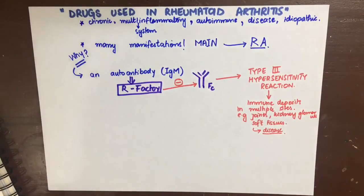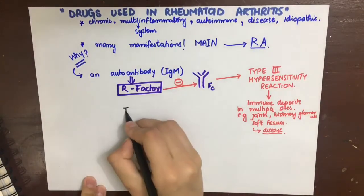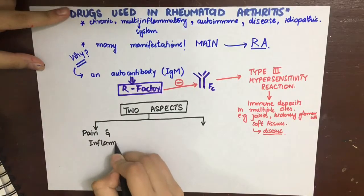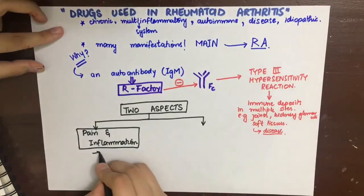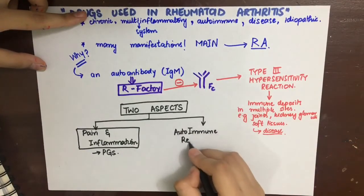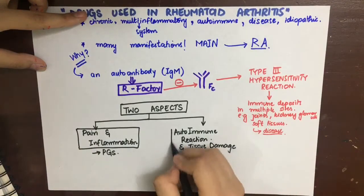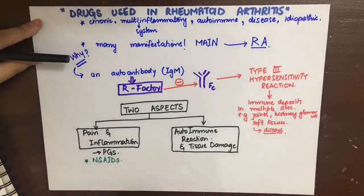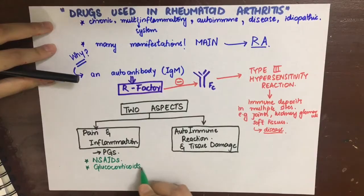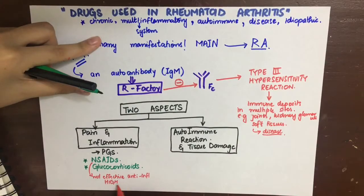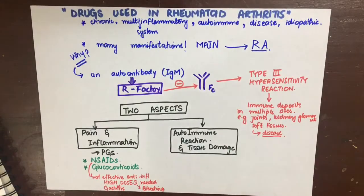To treat rheumatoid arthritis we focus on two aspects. One is the pain and inflammation that the disease causes — what the patient complains about most — which is due to prostaglandins and leukotrienes. The other is the autoimmune reaction and the further damage occurring to organs. To combat the pain we use NSAIDs, which also have anti-inflammatory actions, but high doses are required and at high doses NSAIDs have a vast variety of side effects including gastritis and bleeding disorders.